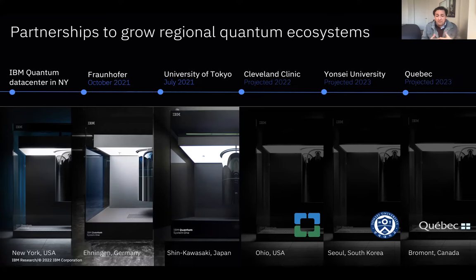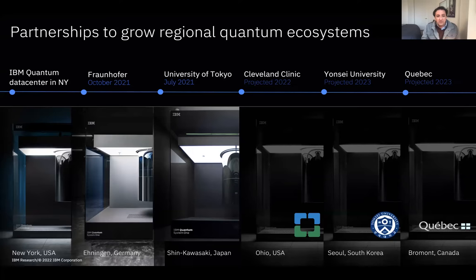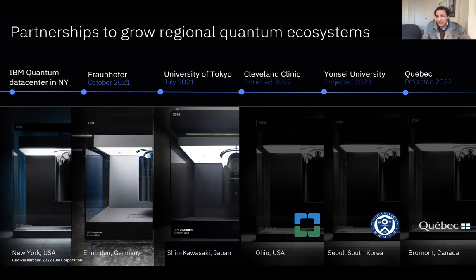Quantum technologies have made the short list of national research priorities. We've placed a quantum computer at the Fraunhofer Institute in Germany, established a national partnership in Japan with quantum computers at the University of Tokyo, announced a partnership with the Cleveland Clinic, and have presence in Korea and Quebec, with more to come. This is becoming a new scientific infrastructure to push the limits of research.